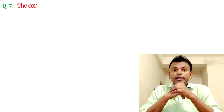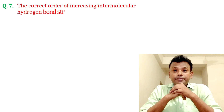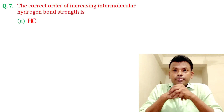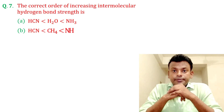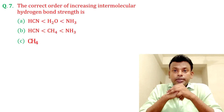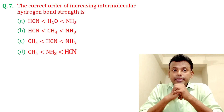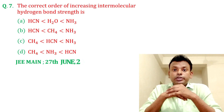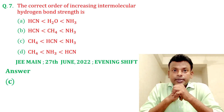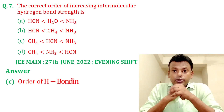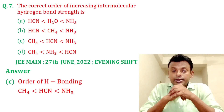Question 7: The correct order of increasing intermolecular hydrogen bond strength. This question was set in JEE Main 27th June 2022 evening shift. Answer: Option C is correct. The order of hydrogen bonding strength is CH₄ < HCN < NH₃. So Option C is the correct answer.